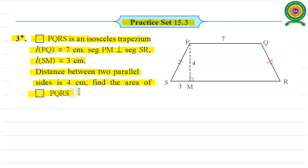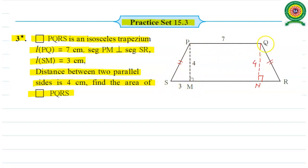Now, once we draw the perpendicular from point Q on its opposite side, let us call the point QN as the perpendicular on NR. Here QN is congruent to PM because both are the distances between parallel lines, so they are congruent. So we can say that triangle PSM and triangle QNR are congruent by using the Hypotenuse-Side test. Once the two triangles are congruent, remaining pairs of sides are congruent. So SM is congruent to NR. Once SM is 3 units, NR value is also 3 units.